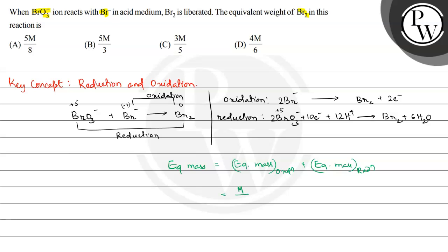Here, two electrons are lost in oxidation, so n-factor is 2. Plus molar mass divided by n-factor of reduction, which is 10.